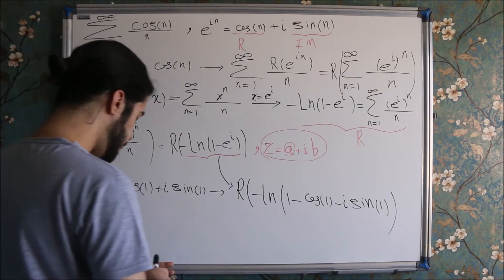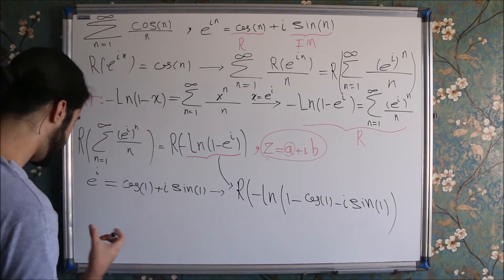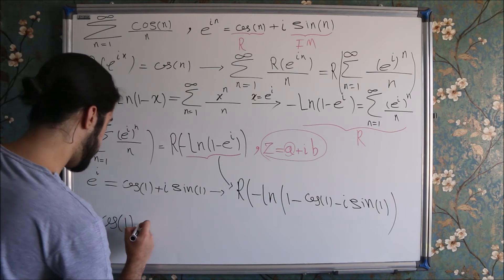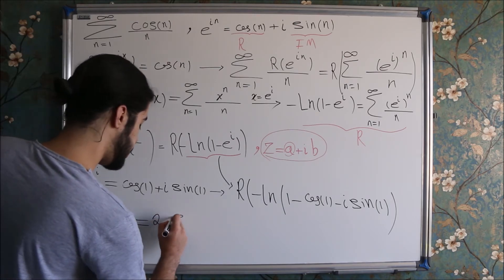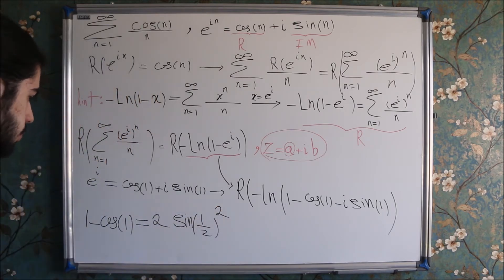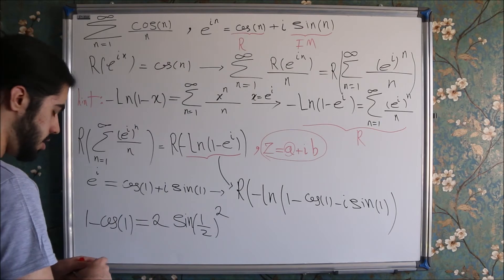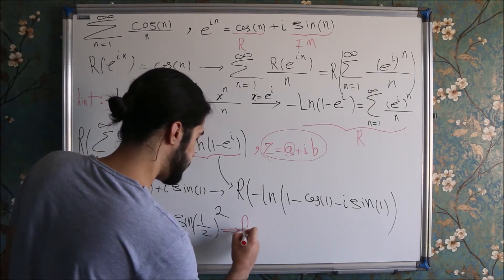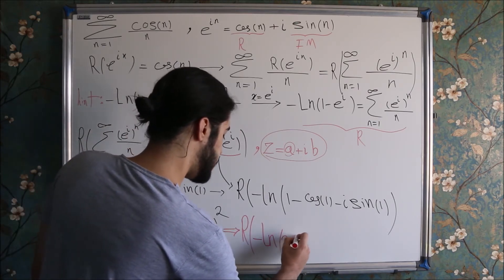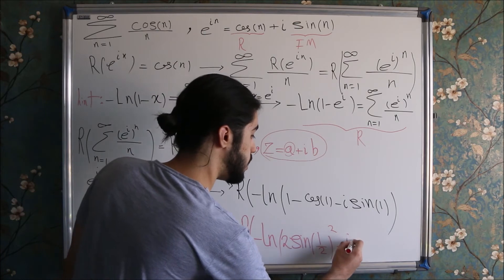Now we can use trigonometric identities. One of them states that 1 minus cosine of 1 is equal to 2 times the sine of 1 over 2, squared. It's a very famous identity. So now we can plug 2 times sine squared of 1 over 2 instead of 1 minus cosine of 1, and we will get the real part of minus ln of 2 times sine squared of 1 over 2, minus i times the sine of 1.